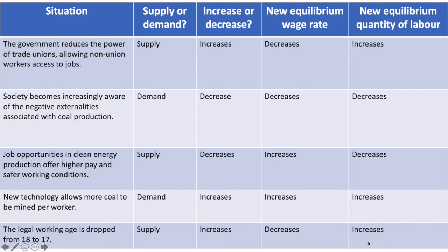If the legal working age is dropped from 18 to 17, then the supply of labour will increase, causing the equilibrium wage rate to fall as more workers compete for jobs, and also increase the quantity of labour.